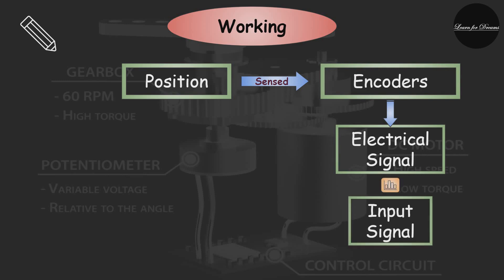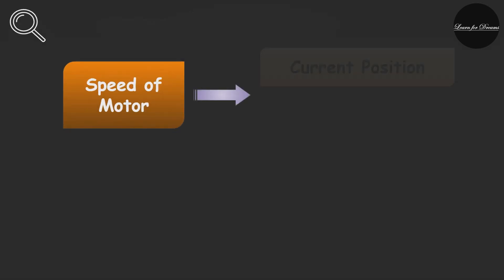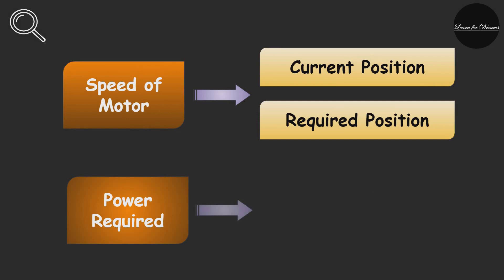Error signal is used to alert the operator when there is a difference between feedback signal and input command. This error signal is given to motor post amplification to set the initial position of shaft. Speed of motor is proportional to the difference between the current position and required position. The amount of power required by the motor is proportional to the distance it needs to travel.